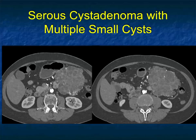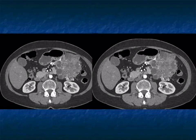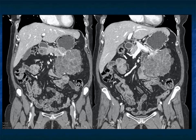Here's a complex cystic lesion in the body and tail of the pancreas with lots of septations, some faint calcifications, and small multiple cysts. There's nothing else in the differential - this is not the look of MCN, not a neuroendocrine tumor. This is the classic honeycomb appearance with a little bit of stretching of the vessels and faint calcifications - a really nice example of a serous cystadenoma. You can see why most cases are incidental findings, though others can cause mass effect when large enough.